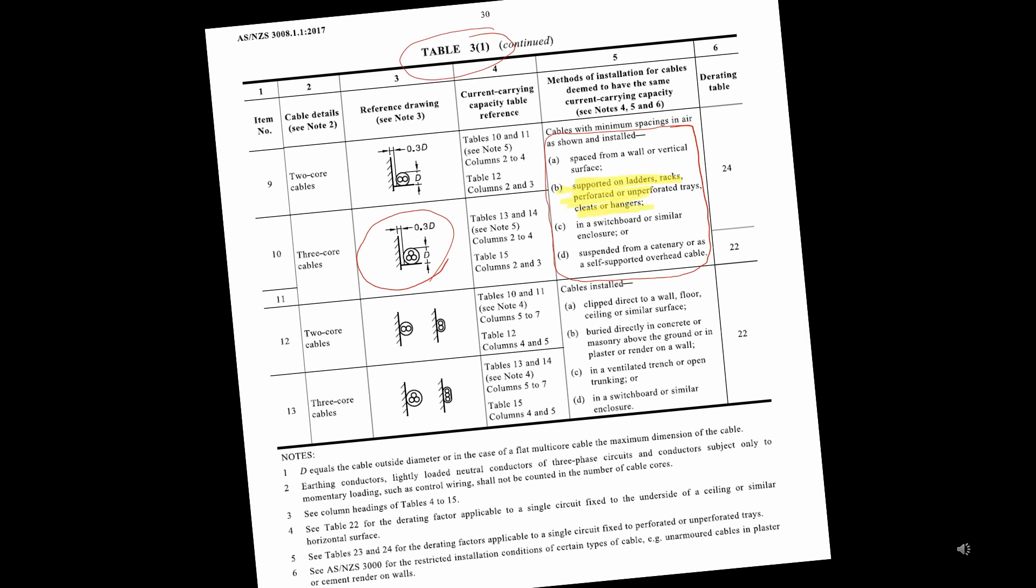So, looking at column 4, we can see that it tells us that the current carrying capacity cables for this particular scenario are Table 13 and Table 14. The derating factors that will be taken into account for this situation will be on Table 24 as stated here.